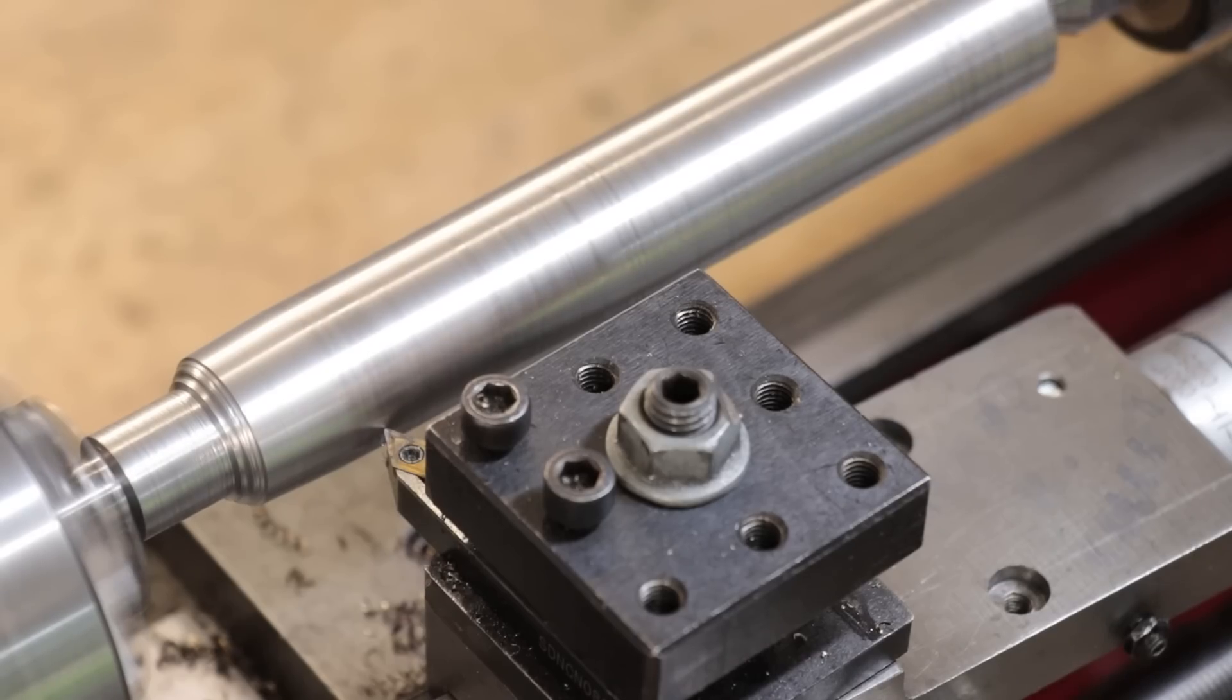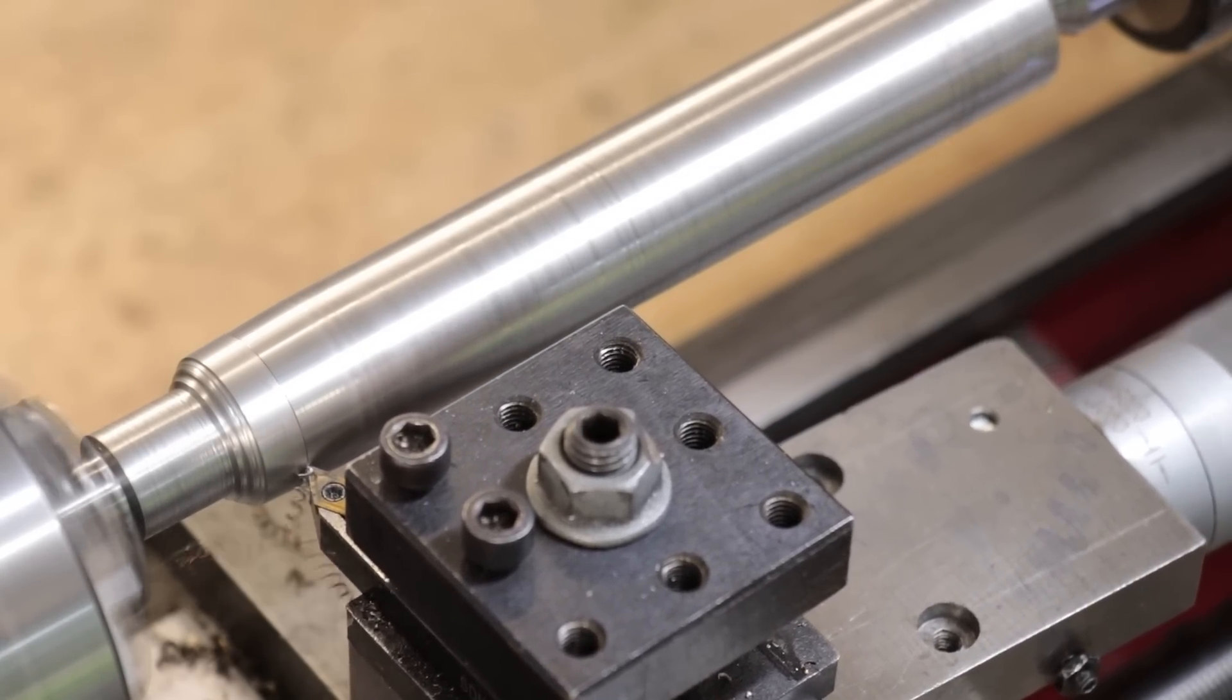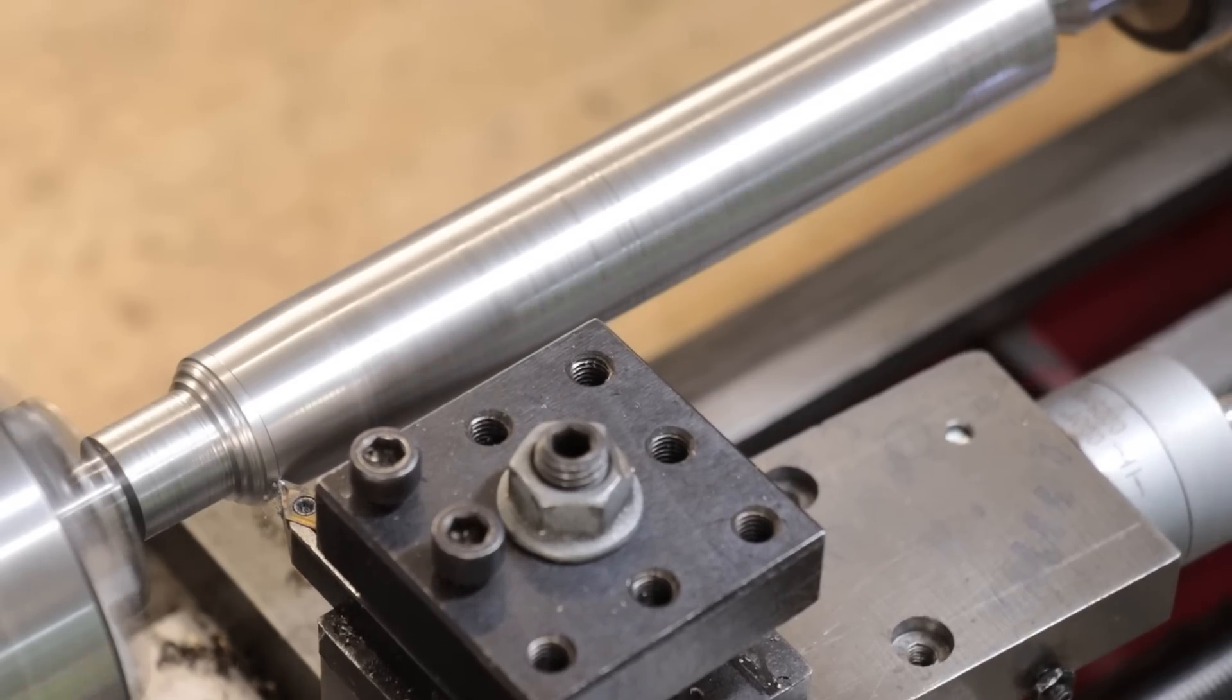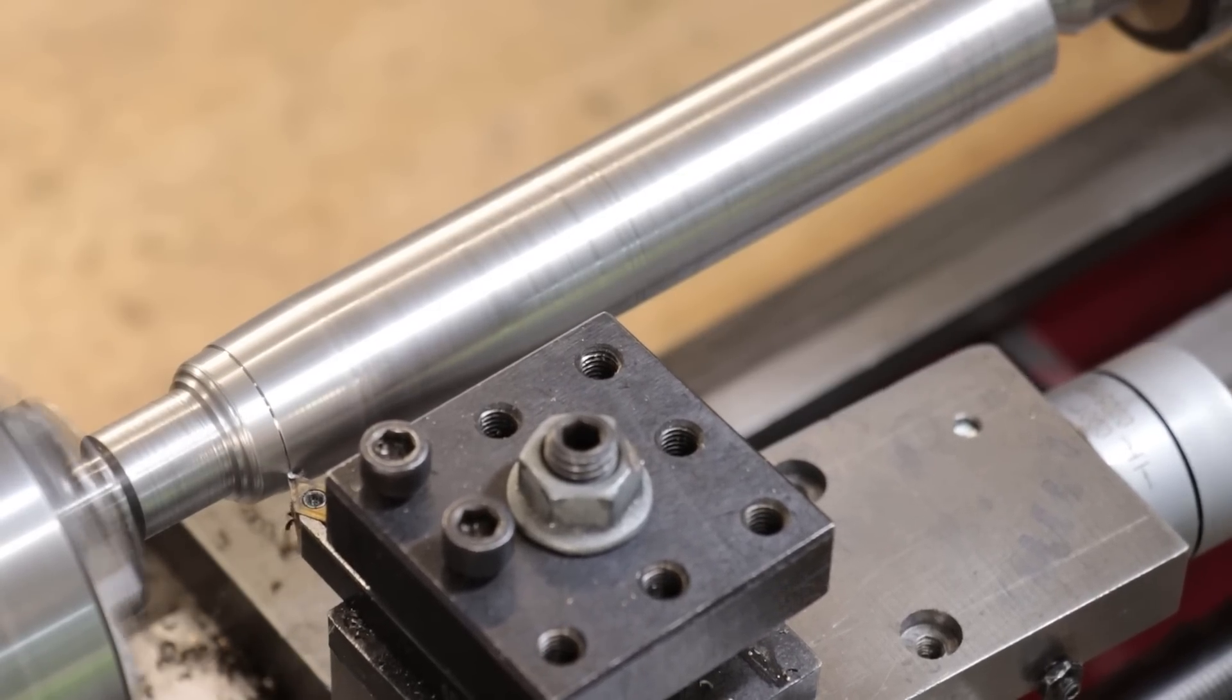The lead screw in the old mini lathe used V-threads when it really should have used trapezoidal, and moving the top and cross slides were noticeably harder than it really should have been. And I'm sure a lot of that came down to the friction that you'd get from that type of screw, which I'd really want to avoid here.